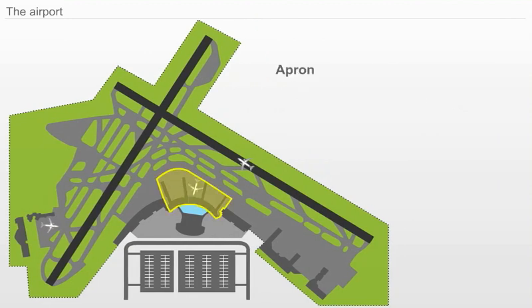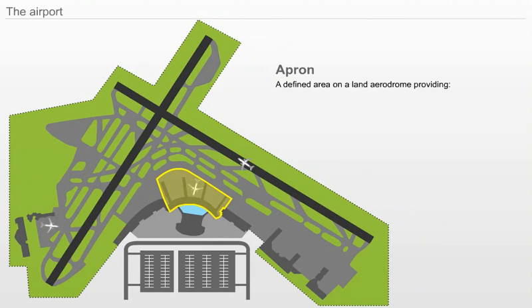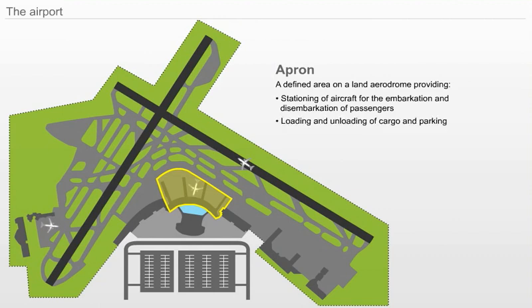Apron. A defined area on a land aerodrome providing stationing of aircraft for the embarkation and disembarkation of passengers, the loading and unloading of cargo and parking.